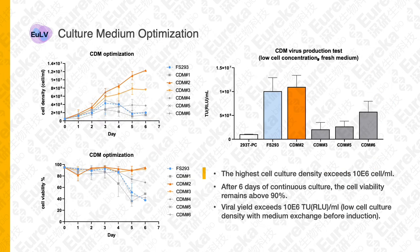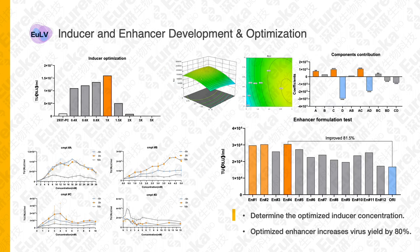The cell needs to be adapted to suspension culture, and culture medium selection is key. We screened and tested a group of commercially available chemically defined mediums. With CDM2, the highest cell culture density can exceed 10 million cells per mL, maintaining high cell viability after six days of continuous culture, and this medium does not interfere with virus production. We also optimized the inducer concentration and enhancer formulation using the DOE method to screen four compounds as enhancers, and after optimization, virus yield was increased by 80%.